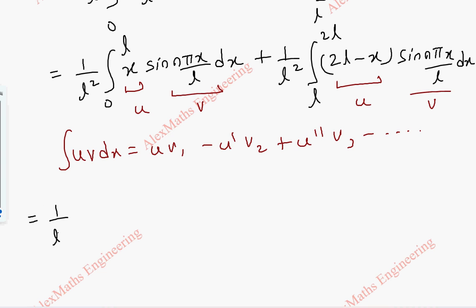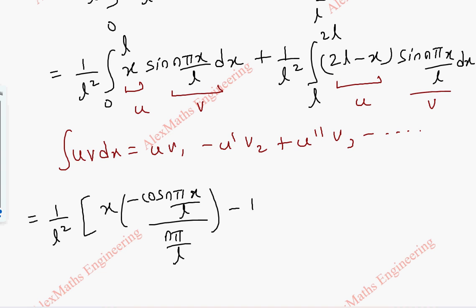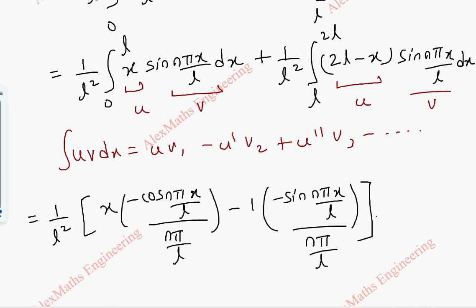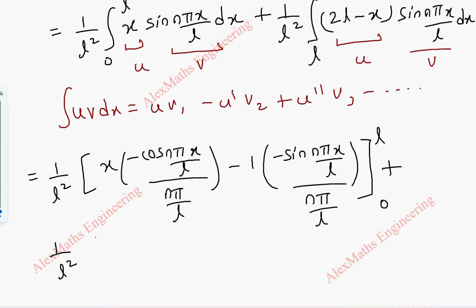For the first term: 1 by L squared times [x · (−cos(nπx/L)/(nπ/L)) minus 1 · (−sin(nπx/L)/(nπ/L)²)], evaluated from 0 to L. For the second term: 1 by L squared times [(2L − x) · (−cos(nπx/L)/(nπ/L)) minus (−1) · (−sin(nπx/L)/(nπ/L)²)], evaluated from L to 2L.